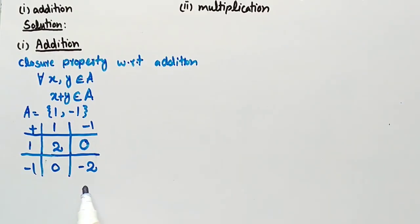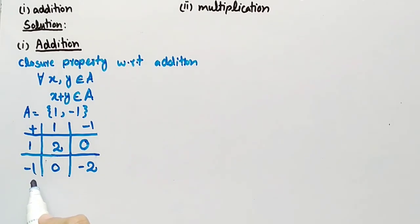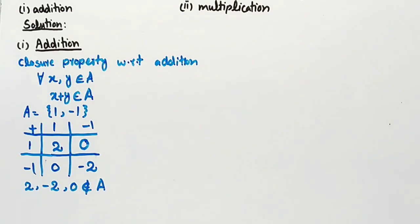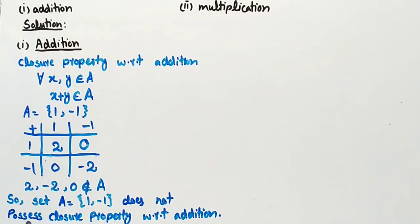In this table, we added each element of set A one by one with every other element of set A. We can clearly see that 2, -2, and 0 do not belong to set A. So, set A = {1, -1} does not possess closure property with respect to addition.